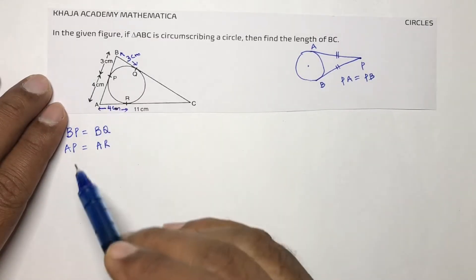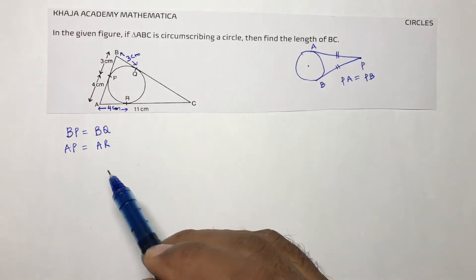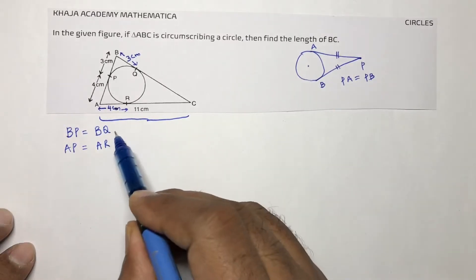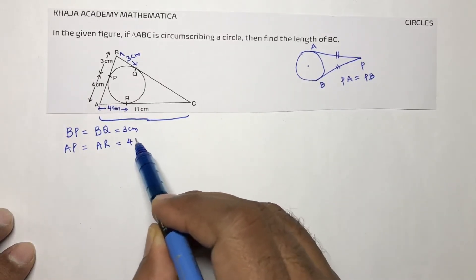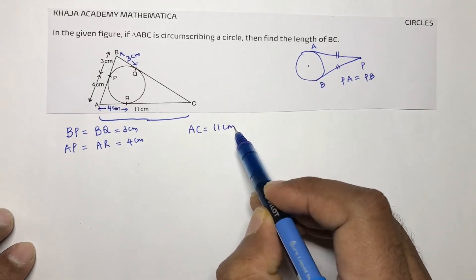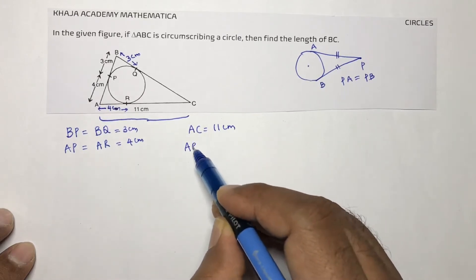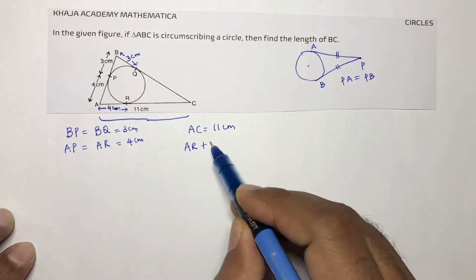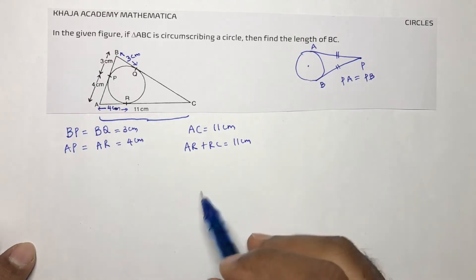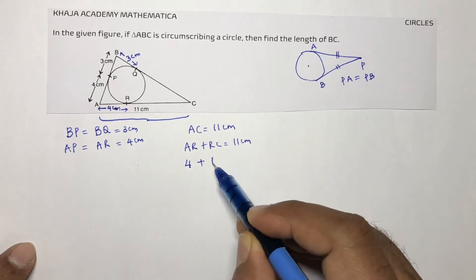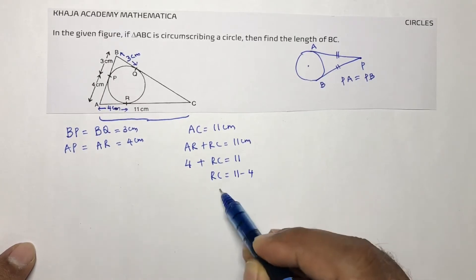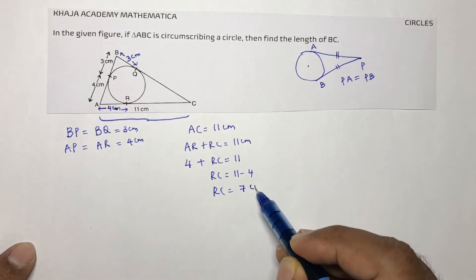AR is 4 centimeters. Now the total AC is 11 centimeters. AC equals AR plus RC, so 4 plus RC equals 11, which gives RC equals 11 minus 4, so RC equals 7 centimeters.